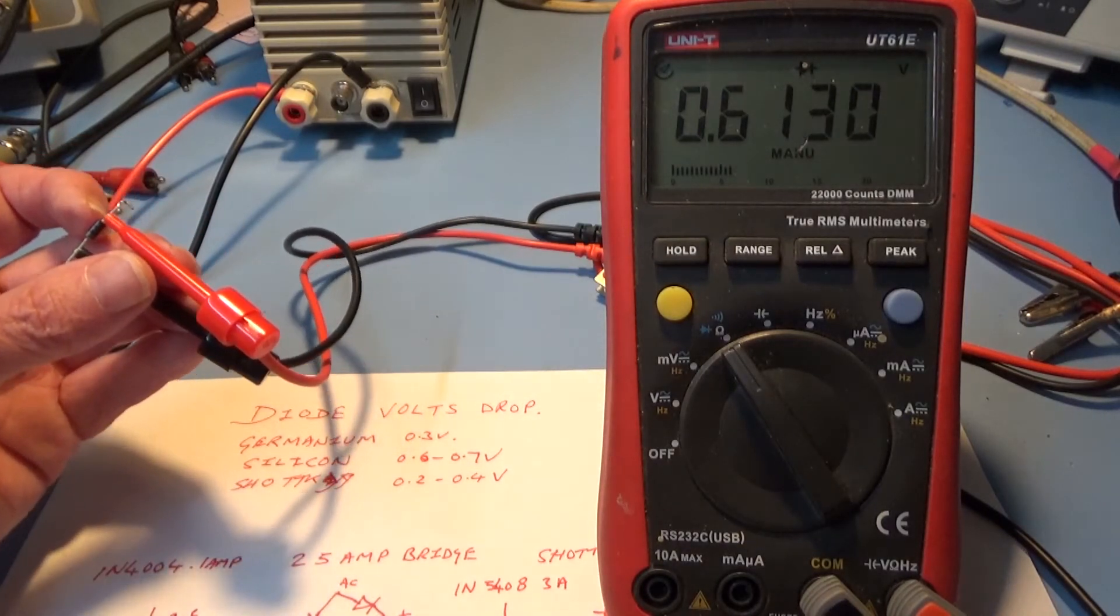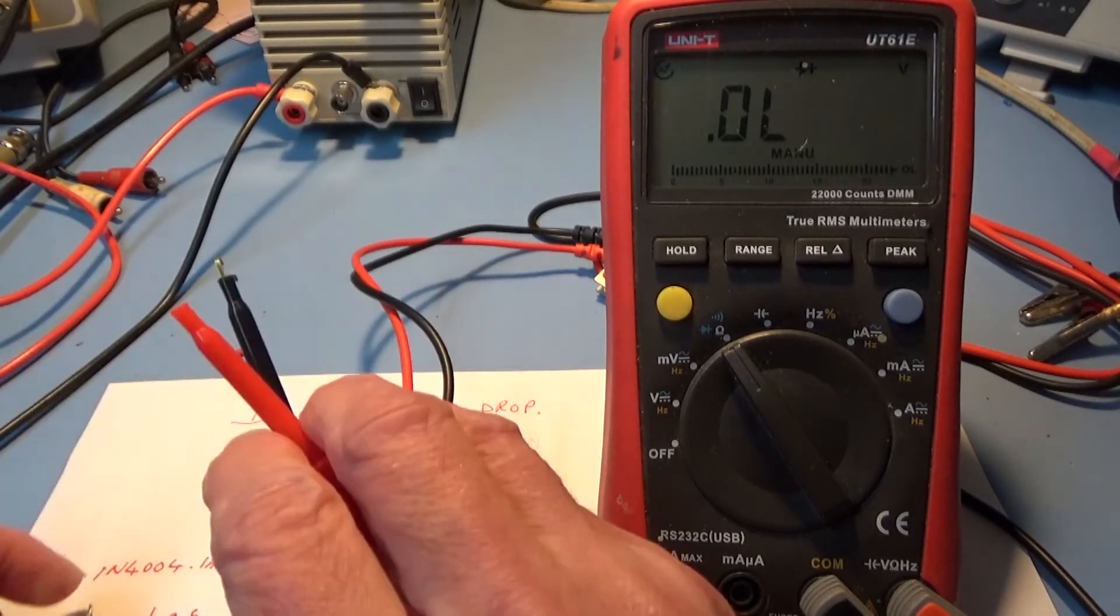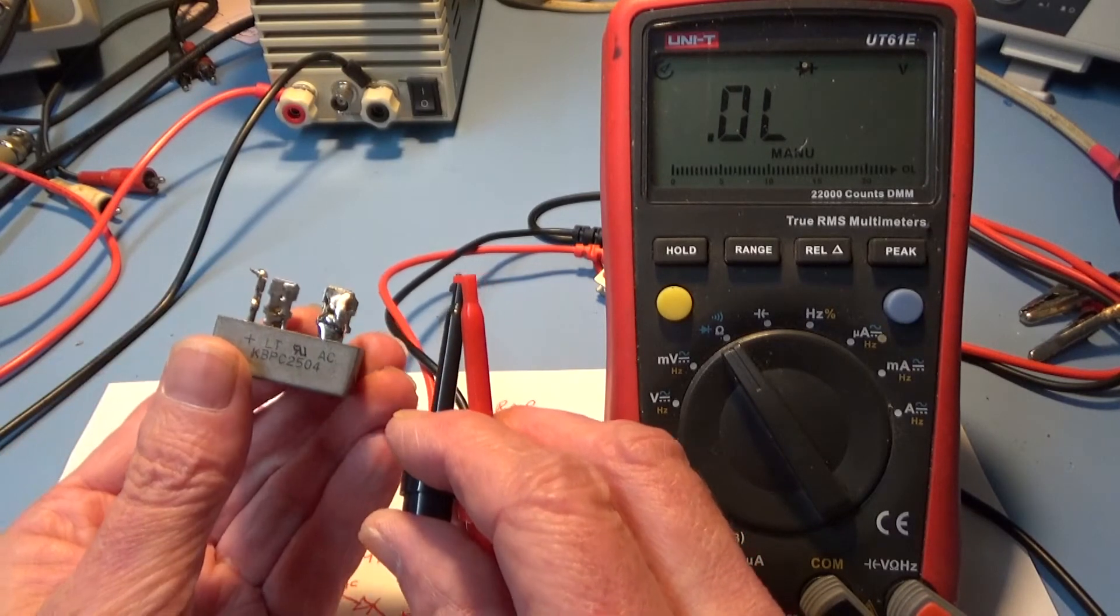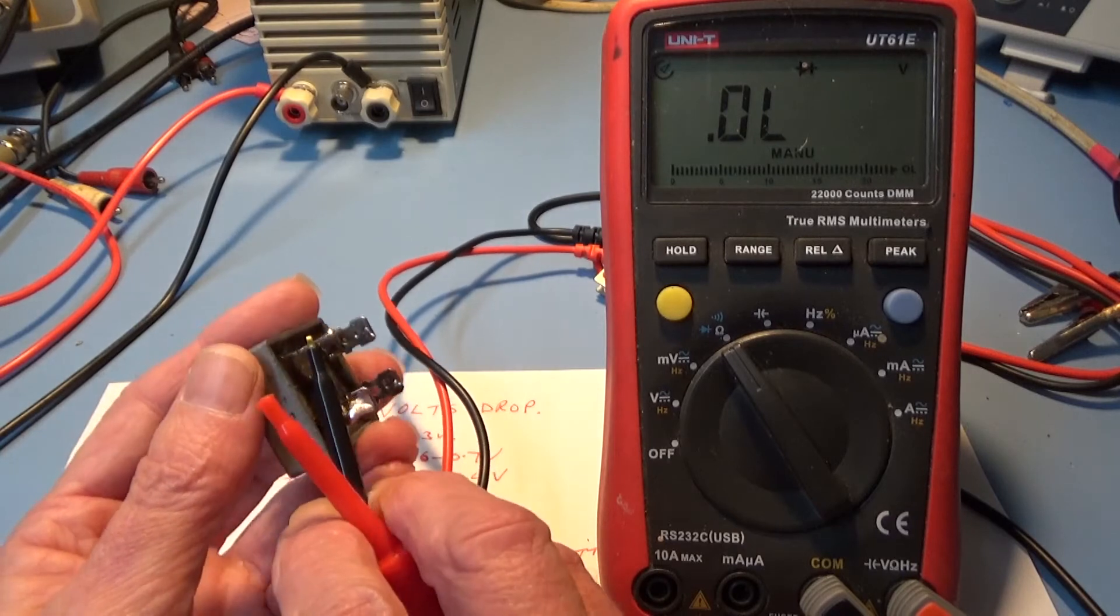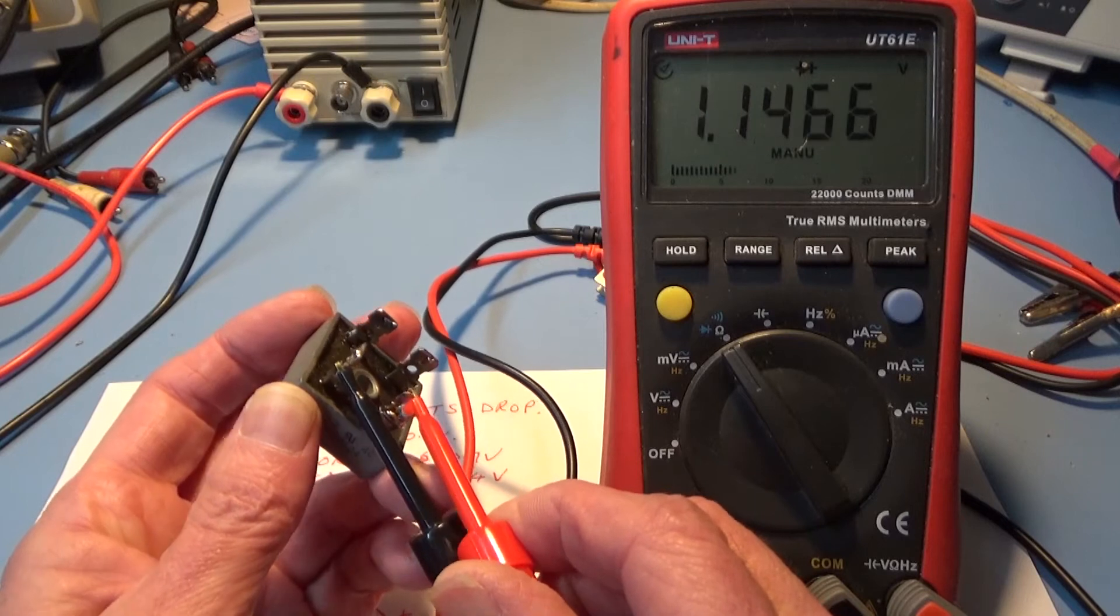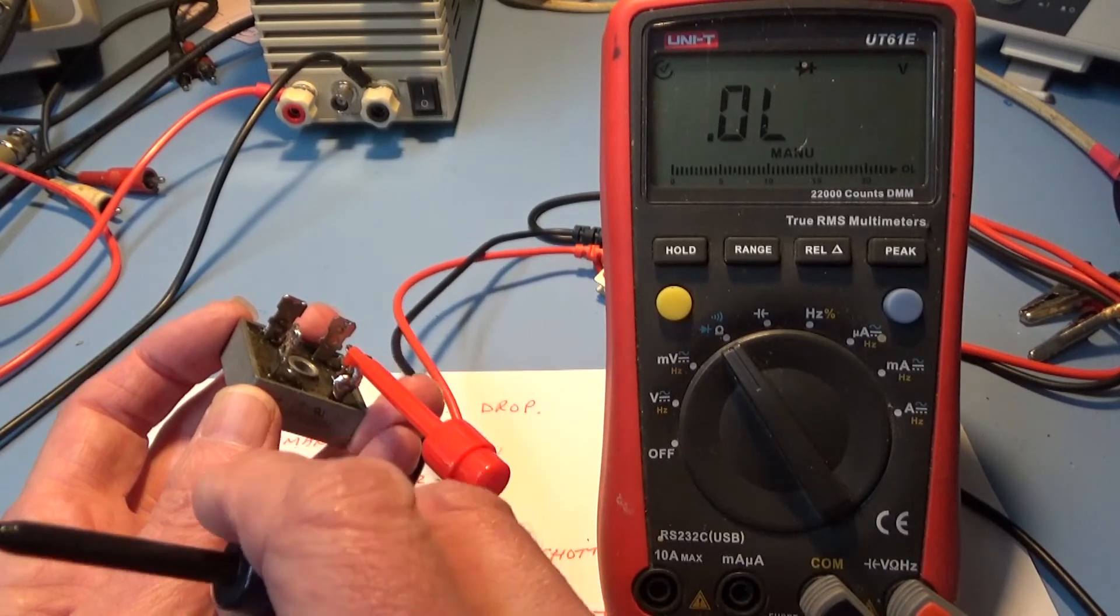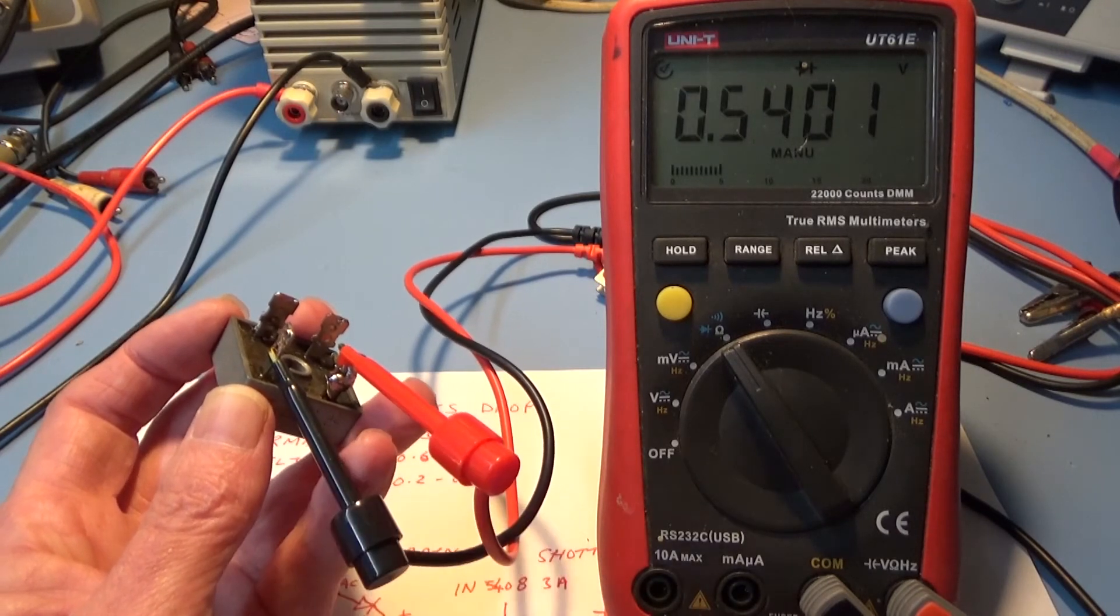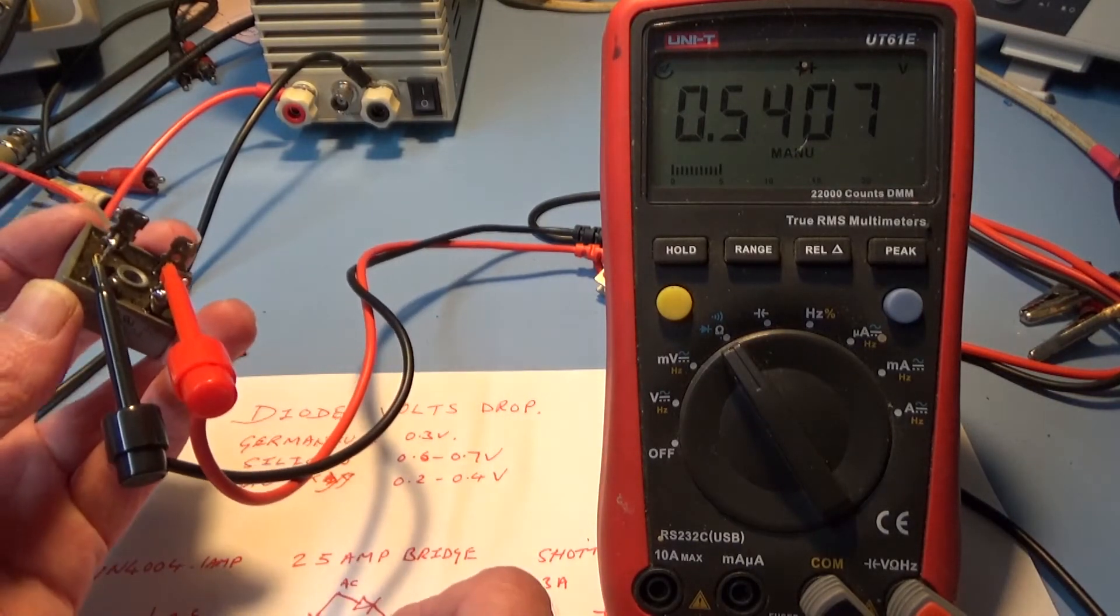Next one is this big 25 amp bridge rectifier. I use silicon diodes because it's just used for mains frequencies. Well that's even lower, 0.54 volts on that one.